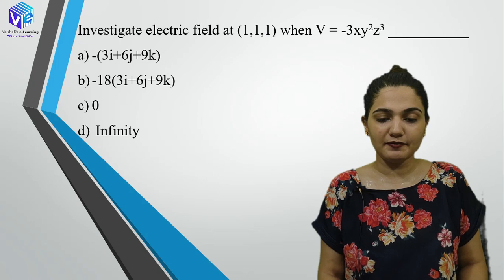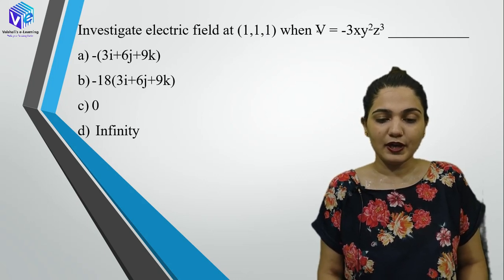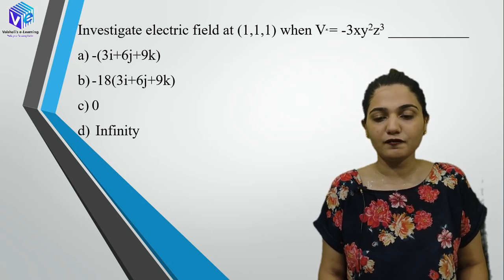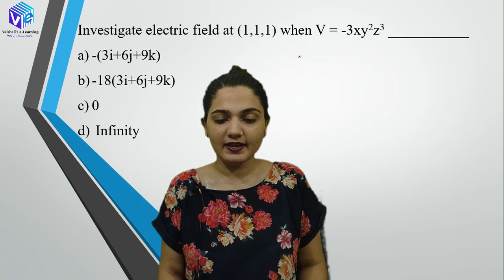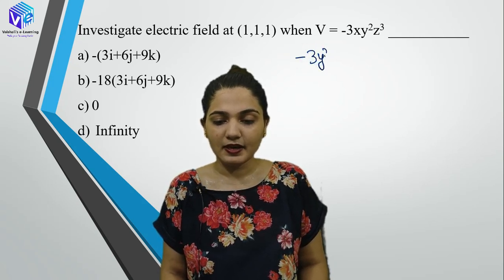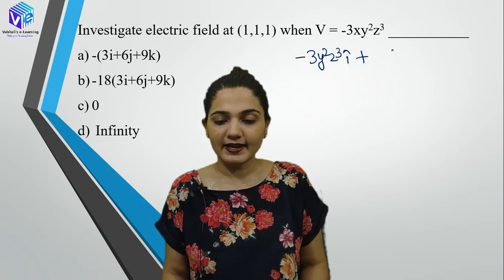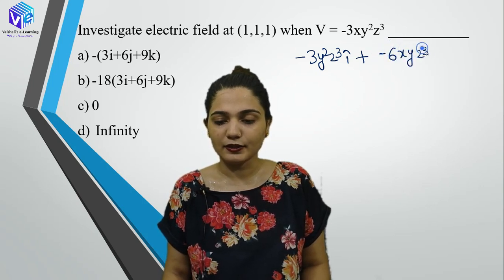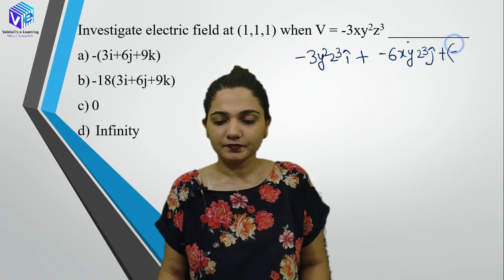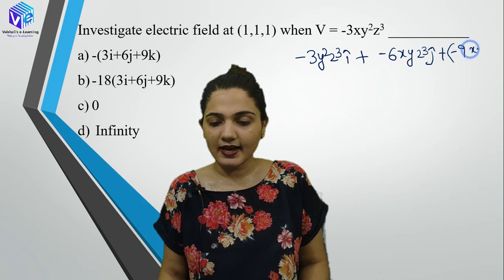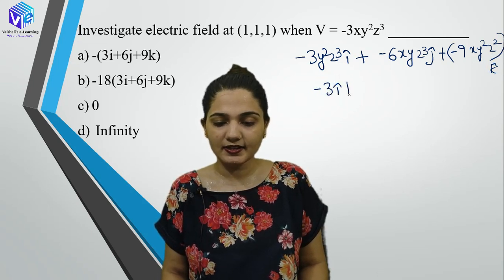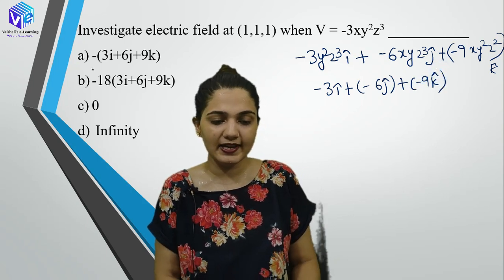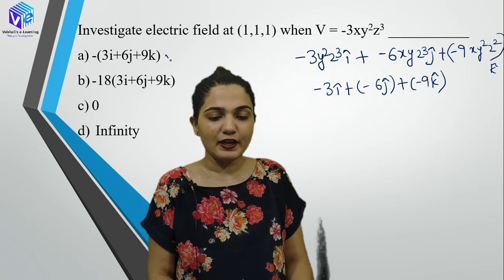Investigate the electric field at point (1,1,1) when V = −3xy²z³. We know gradient of V = electric field. So del(V)/del(x) = −3y²z³ i-cap, del(V)/del(y) = −6xyz³ j-cap, del(V)/del(z) = −9xy²z² k-cap. Putting (1,1,1): −3i − 6j − 9k, taking minus common gives −(3i + 6j + 9k).